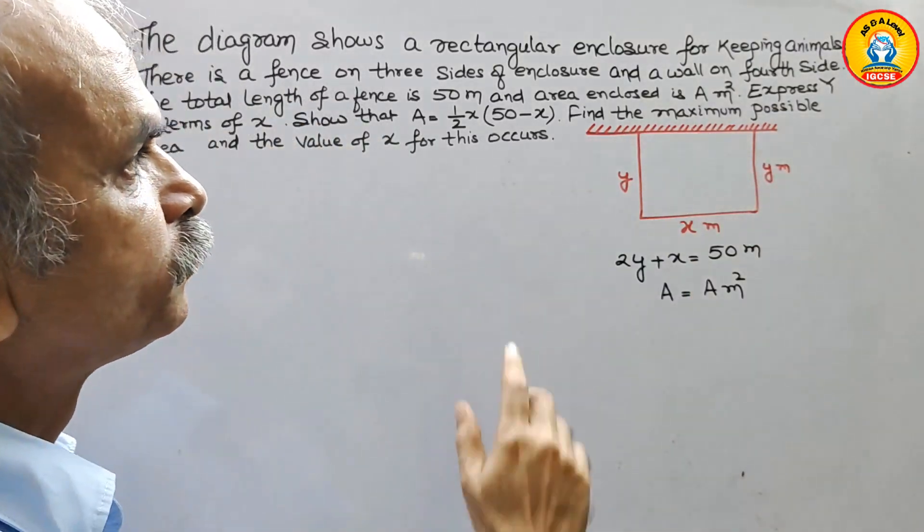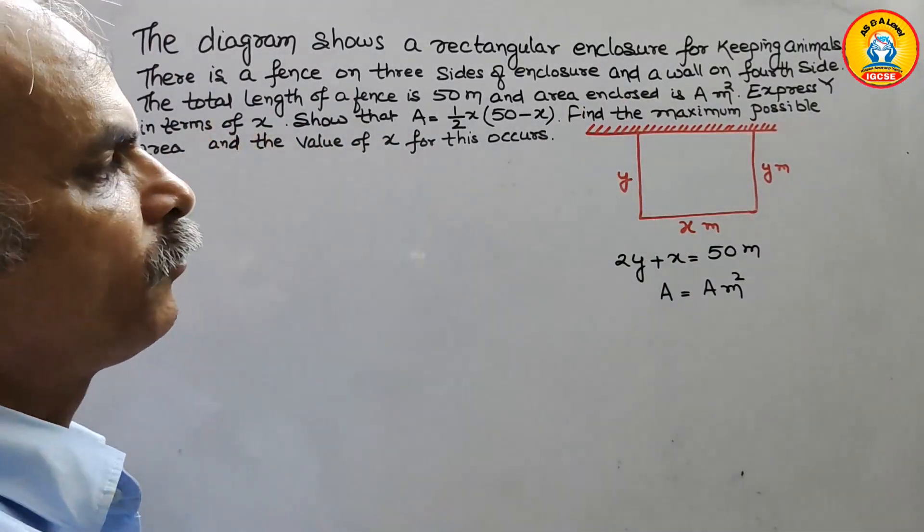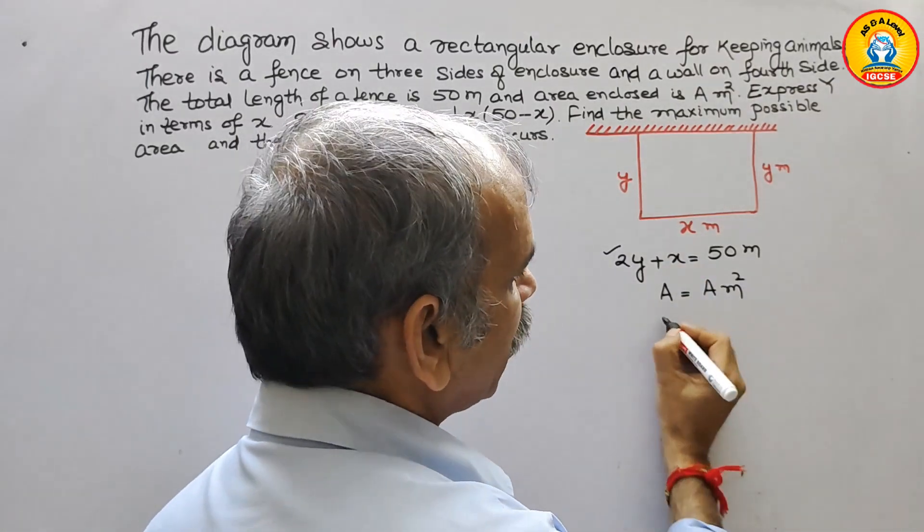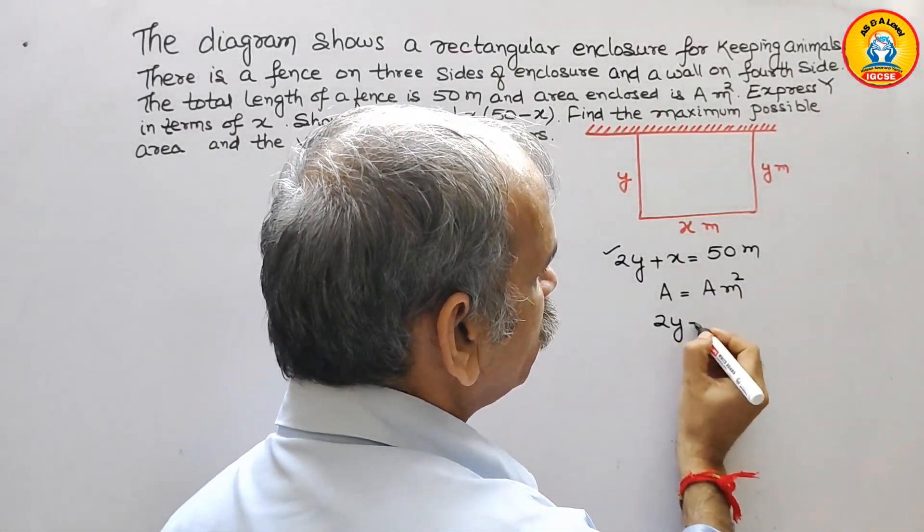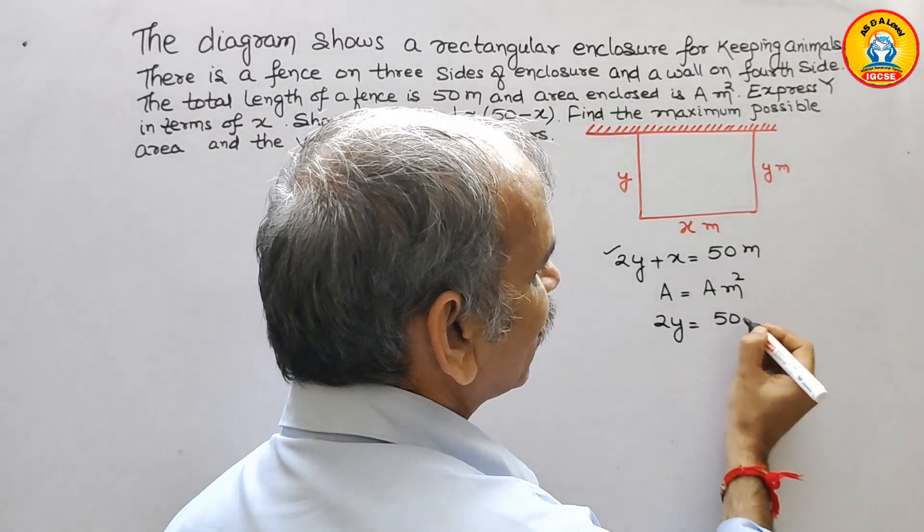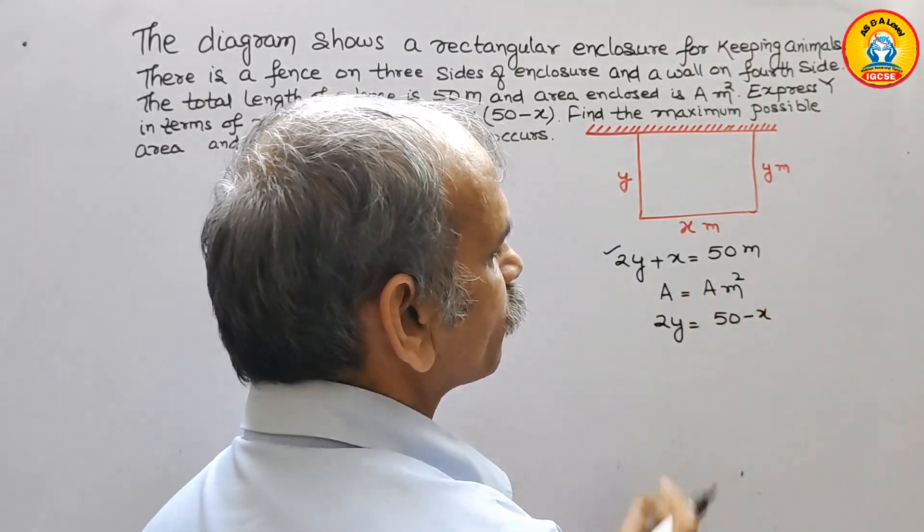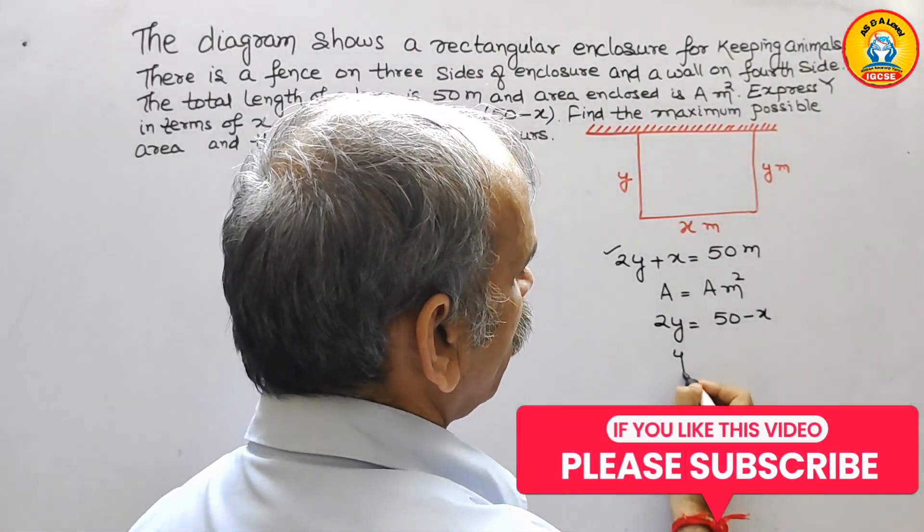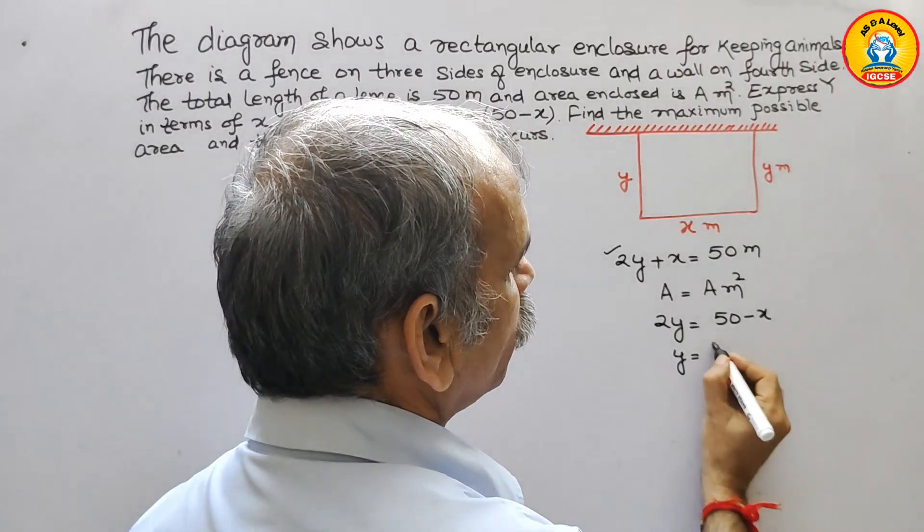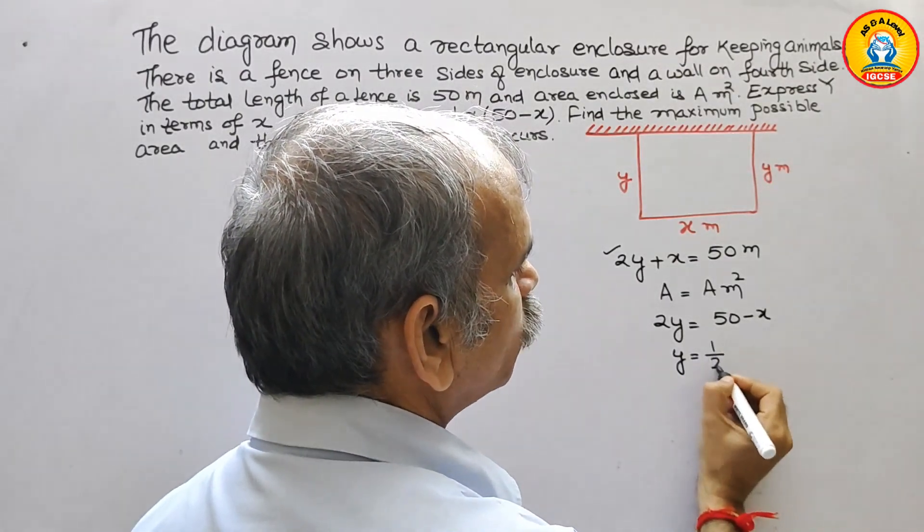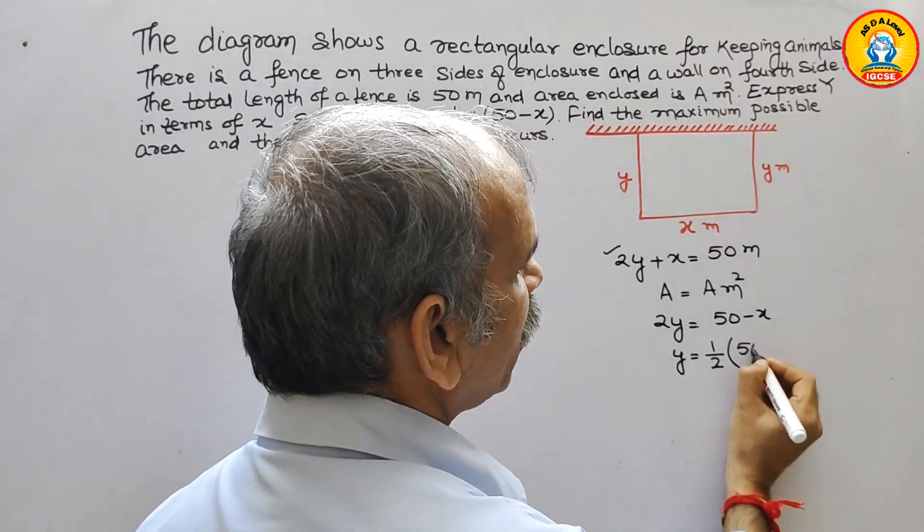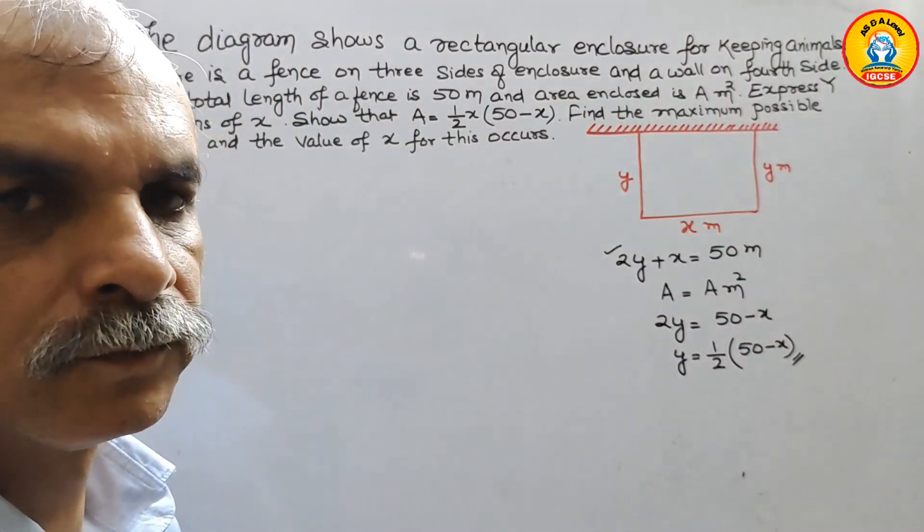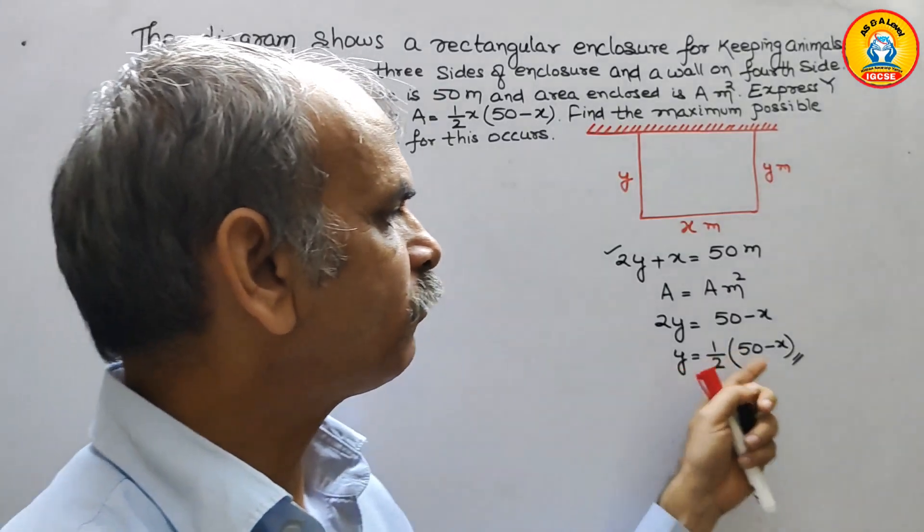Next, express y in terms of x. So now from this we have to express y. So now we can say 2y is equal to 50 minus x.